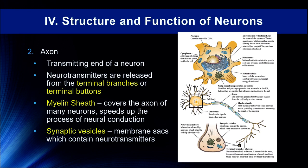Synaptic vesicles are membrane sacs which contain neurotransmitters. These synaptic vesicles fuse with the cellular membrane at the terminal button and release neurotransmitters into the synapse. When an action potential reaches those terminal buttons, voltage-gated ion channels open, those vesicles fuse with the membrane, and the neurotransmitters are released.